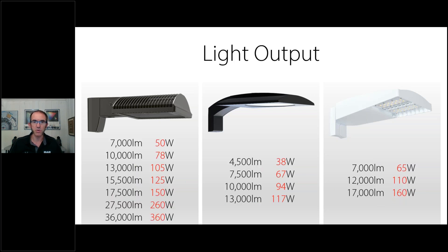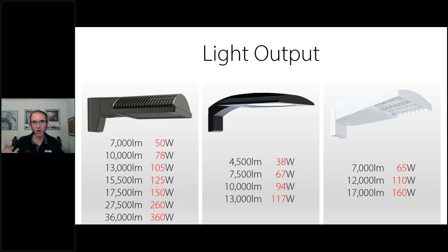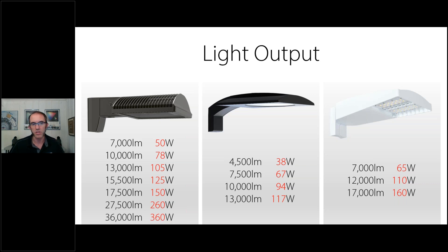The families differ in available wattages. The ALED ranges from 50 watts up to 360 watts, offering many light output options. The Ive Lot starts at 38 watts with 4,500 lumens and goes up from there. The Lot Blaster offers 7,000, 12,000, and 17,000 lumen packages — low, medium, and high light outputs. The ALED's 260W and 360W versions provide the most light output.